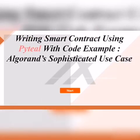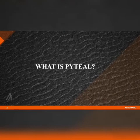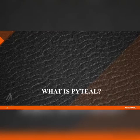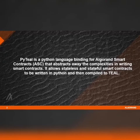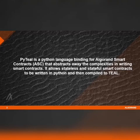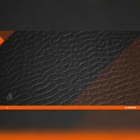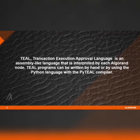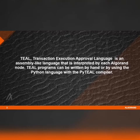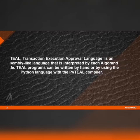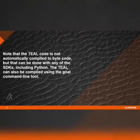How to write a smart contract using PyTeal with code examples. PyTeal is a Python language binding for Algorand smart contracts that abstracts away the complexities in writing smart contracts. It allows stateless and stateful smart contracts to be written in Python and then compiled to Teal. Teal, which stands for Transaction Execution Approval Language, is an assembly-like language that is interpreted by each Algorand node. Teal programs can be written by hand or by using the Python language with the PyTeal compiler.